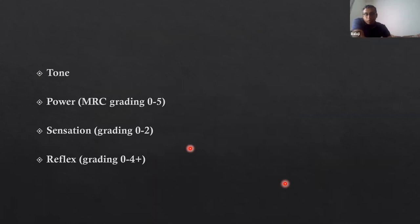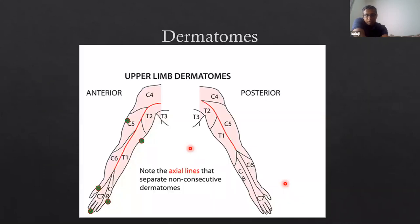In the neurological examination, test tone and power graded zero to five on the MRC scale: zero is no power, one is a flicker, two is some movement, three is movement against gravity eliminated, four is movement against gravity, and five is normal power. Sensation is graded zero to two: zero is no sensation, one is altered sensation, and two is sensation present. Reflexes are graded zero to four plus: zero is no reflex, one plus is a very mild reflex, two plus is normal, three plus is brisk without clonus, and four plus is with clonus.